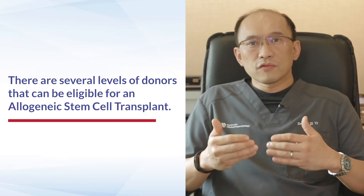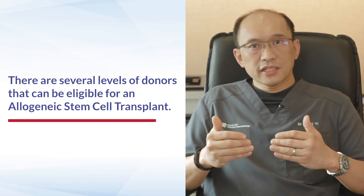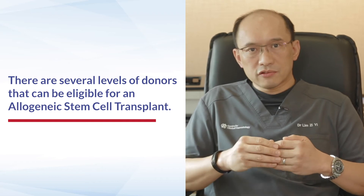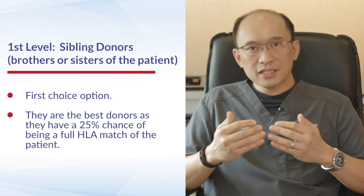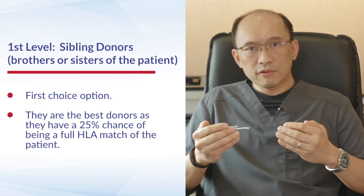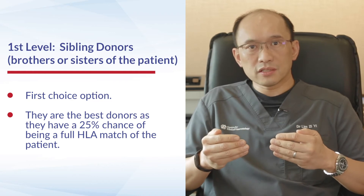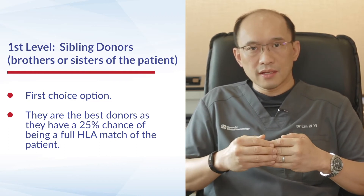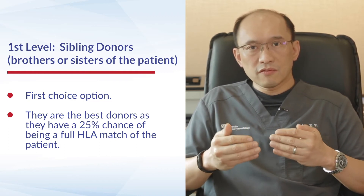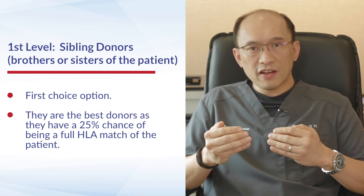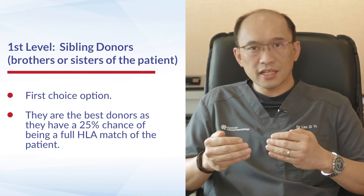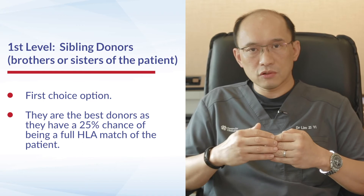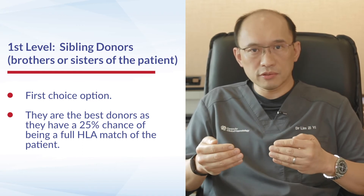There are several levels of donors who can potentially be eligible for allogeneic transplants. The best donors we always prefer to use are sibling donors — either brothers or sisters of the patient — because there is a 25% chance that a sibling can be a full HLA match. This tends to be the first choice option.